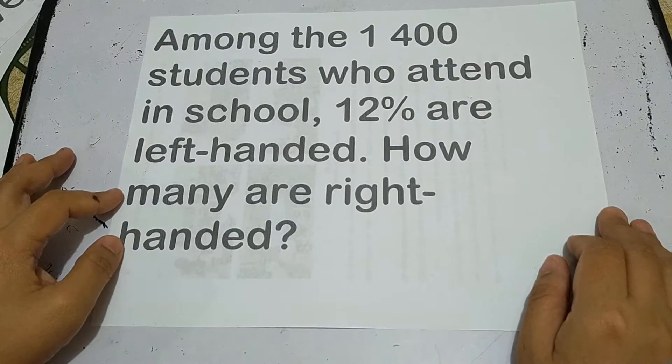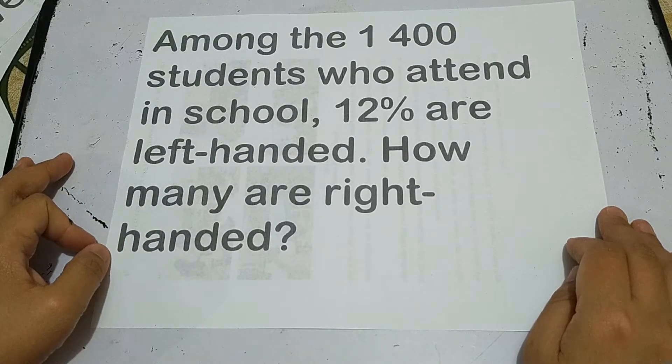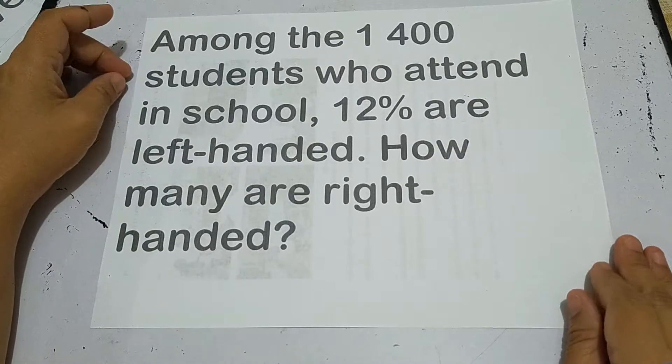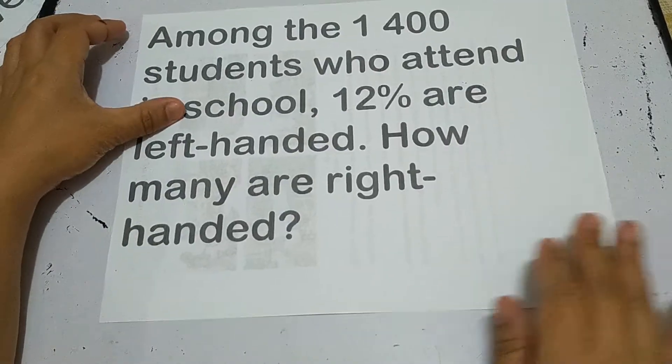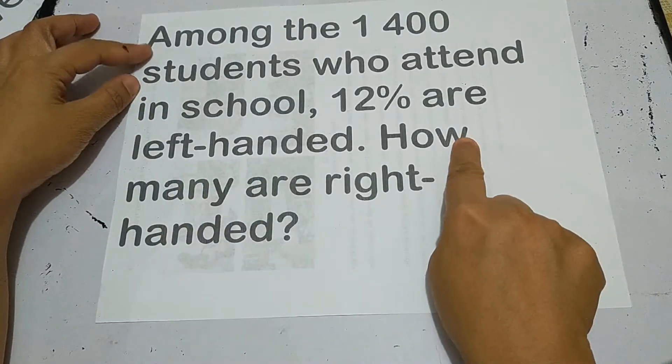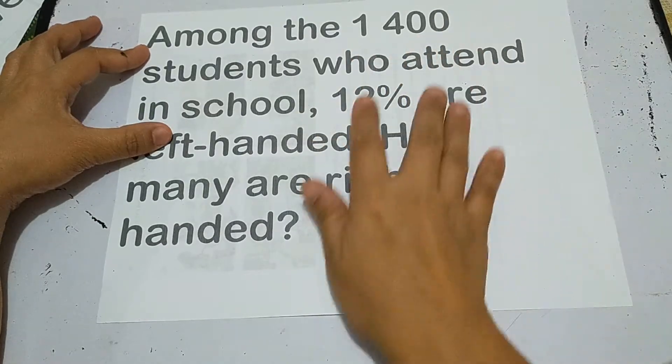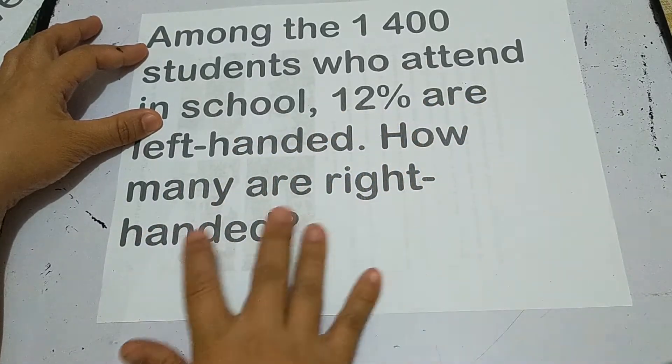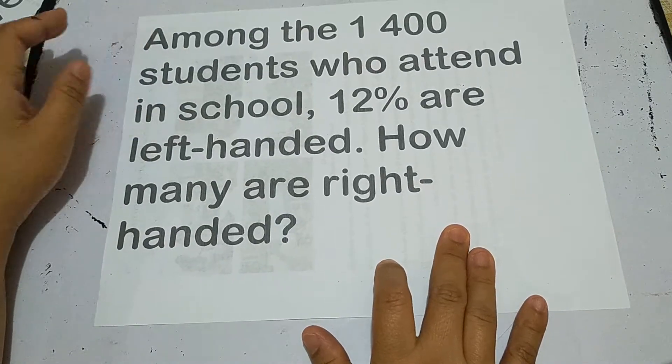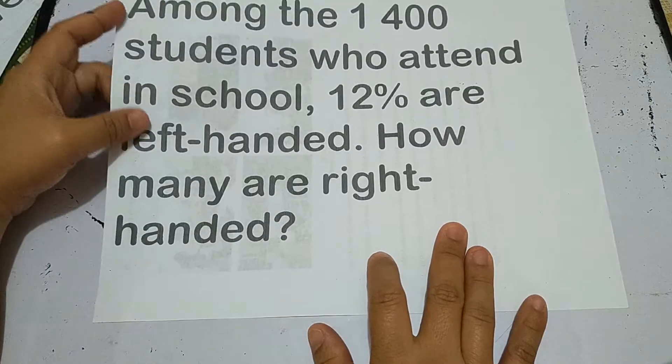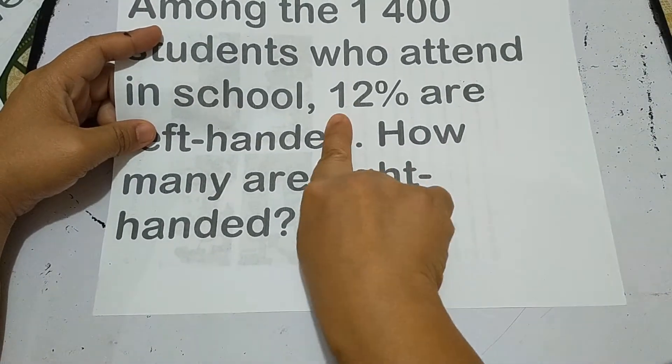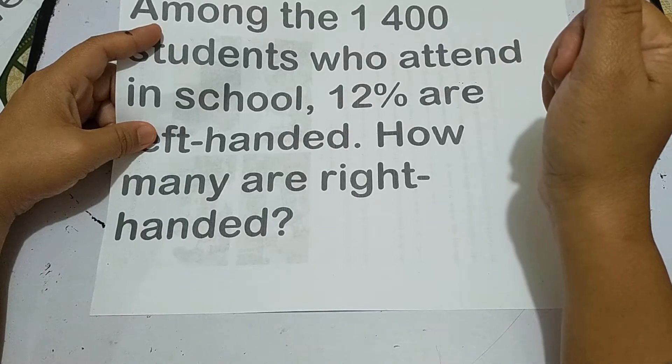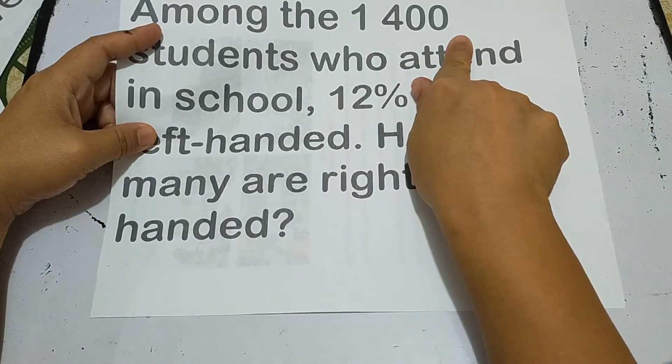Let's solve another problem. Among the 1,400 students who attend a school, 12% are left-handed. How many are right-handed? This problem is an example of non-routine problems. The previous one was routine. Why? What's the difference? We're given the percent for left-handed, but the question asks for right-handed. That means there are two procedures. You can find 12% of 1,400, then subtract the result from 1,400. Or you can find 88% of 1,400 directly, and that becomes the answer automatically.